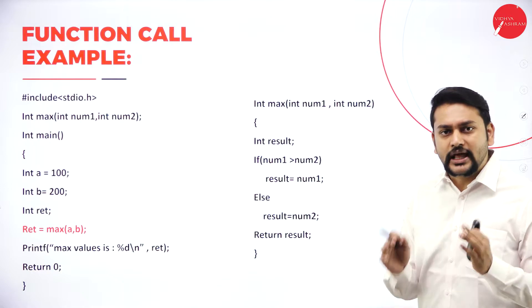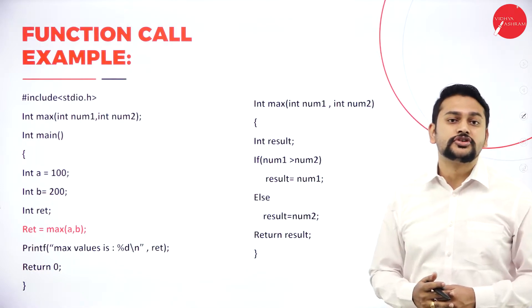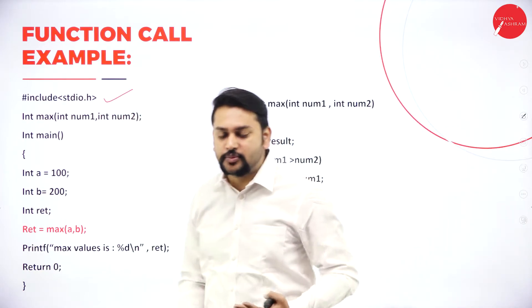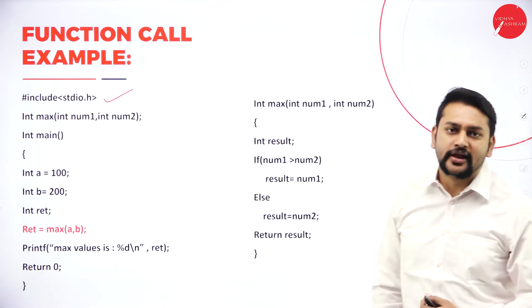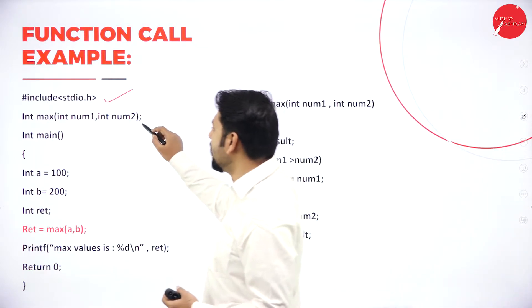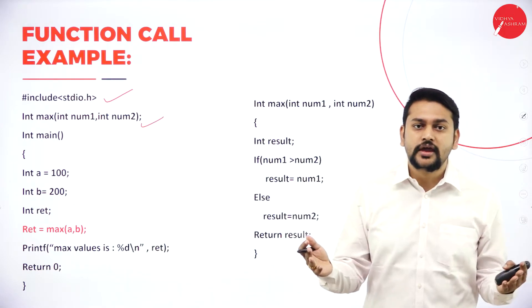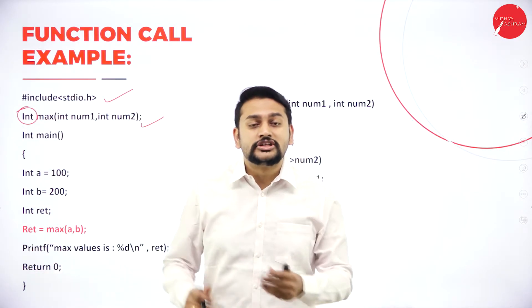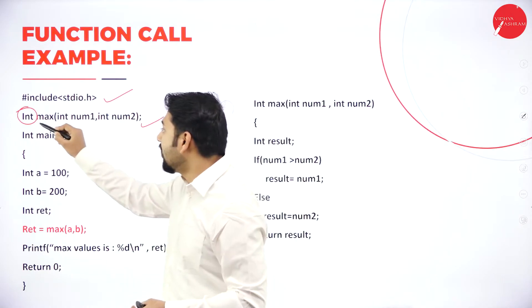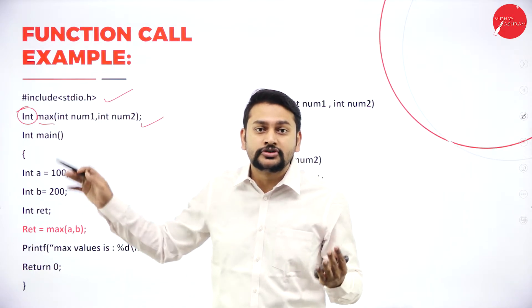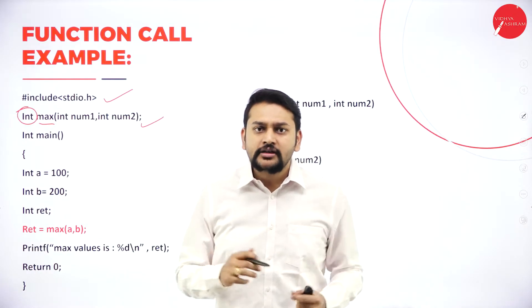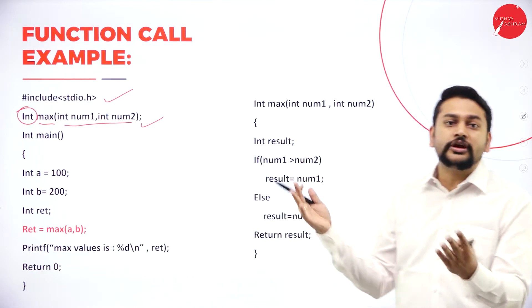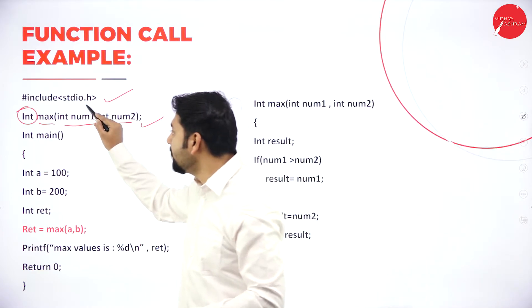Please look at this program. Let's trace and understand what the function call is all about. This statement is what I will call the signature of a function. What is the return type? The return type is int, meaning this function returns some value. The name of the function is 'max'. How many parameters do I have here? I have two parameters of type int — num1 and num2.